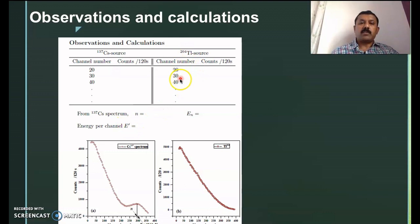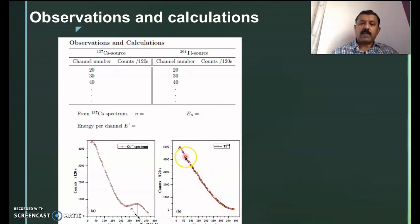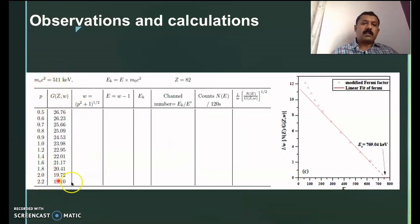Similarly, repeat the same experiment for the thallium-204 source. If you plot counts as a function of channel number for the thallium source, you get a characteristic graph. This is the data obtained from the beta-ray spectrometer.